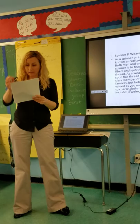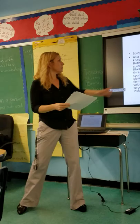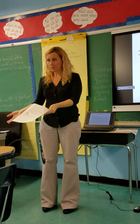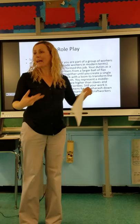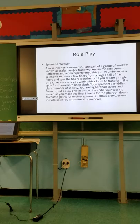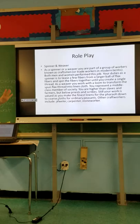So this is activity number two — that was activity number one. In activity number two, we are going to read about the different roles that we just looked at. I'm going to do a model first. I'm going to do the spinner and the weaver, read through it, and think about how a spinner and weaver would act and what they would do. Then you're going to do the same thing in your seat, come up, and act it out.